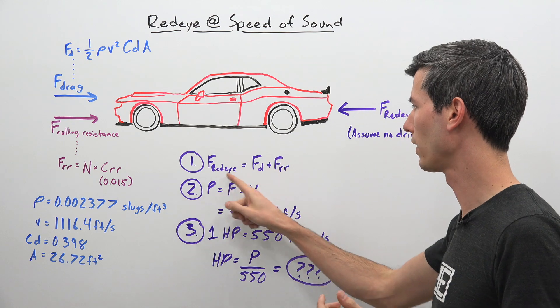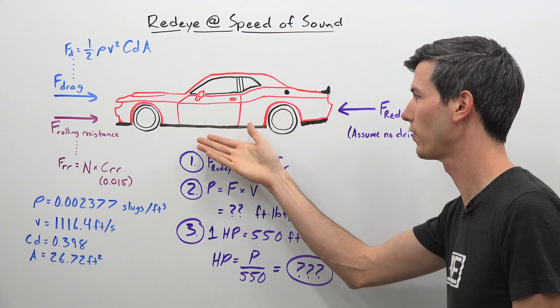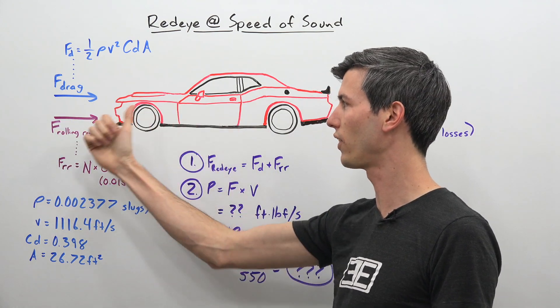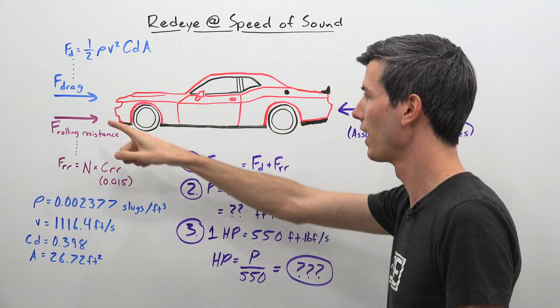So the first thing we want to do is balance our forces. In order to have this Challenger traveling at the speed of sound, it's going to be accelerating with those rear wheels and there are going to be some forces resisting that force that it is putting down at the rear wheels.